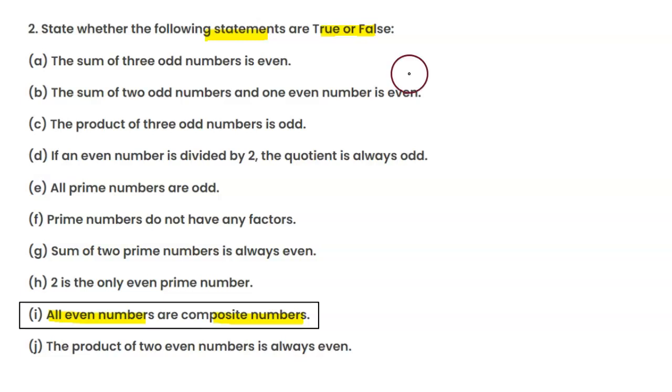So, first of all, let's see what even numbers are. Even numbers are numbers that are divisible by 2. For example, 0, 2, 4, 6, 8, 10, 12, and so on. These are even numbers.